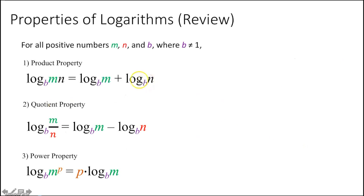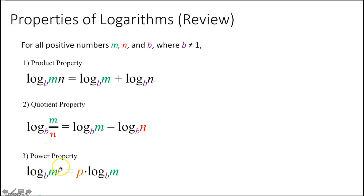Now let's review the properties of logs. For all positive numbers m, n, and b where b is not equal to 1: the product property says log base b of (m times n) can be split into log base b of m plus log base b of n. The quotient property says log base b of (m over n) can be rewritten as log base b of m minus log base b of n. The power property — used a lot — says log base b of m to the p power allows you to take that power and move it out front of the log.